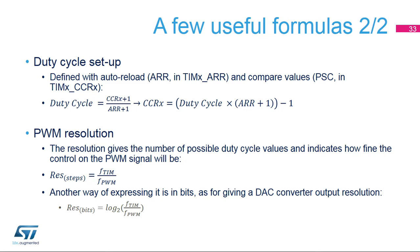The duty cycle is defined using the ARR in the TIMX_ARR register and the compare value in the TIMX_CCRX register. The duty value is given by (compare value+1) divided by (auto-reload value+1). The PWM resolution, expressed as the number of possible duty cycle steps, equals the ratio between the timer clock frequency and the PWM frequency, minus 1. Expressed in bits, the resolution is the base-2 logarithm of that ratio.